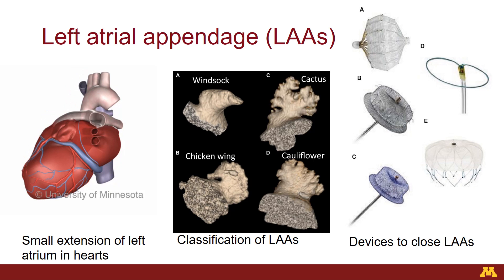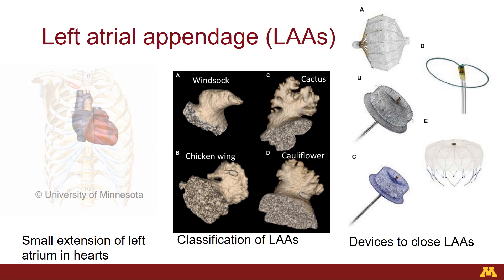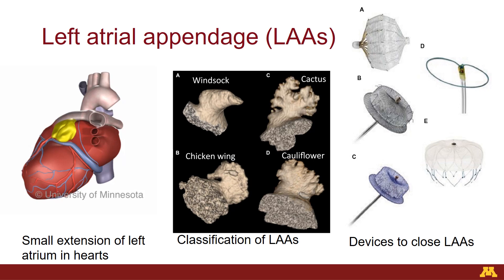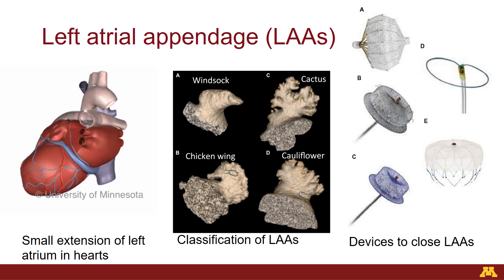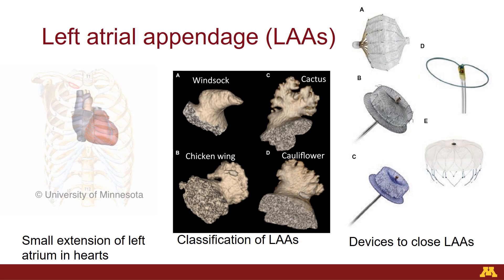This is because blood clots can form in the left atrial appendage when the atria are not conducting normally, and that can lead to a heart attack or even stroke. Physicians will identify what type of left atrial appendage a patient has — whether it's a windsock, chicken wing, cactus, or cauliflower — and then decide which device to close the left atrial appendage with.